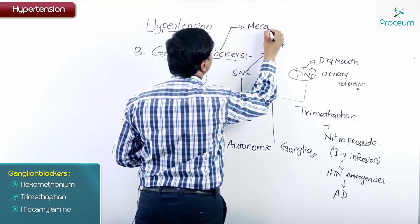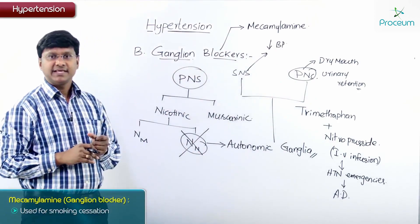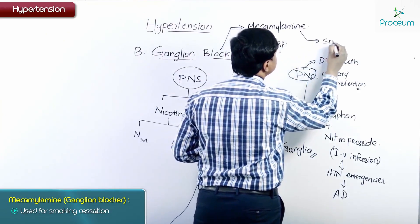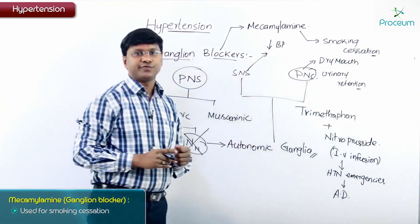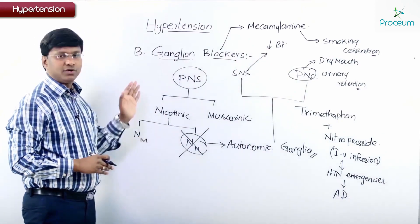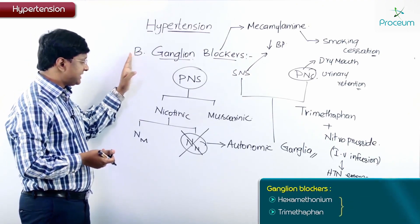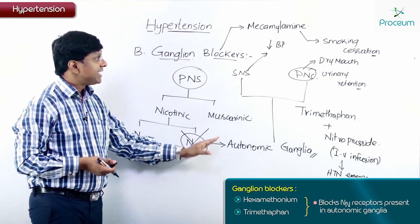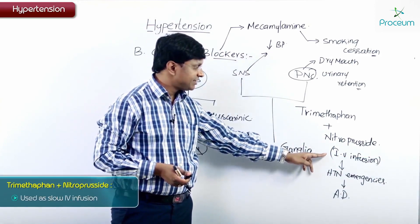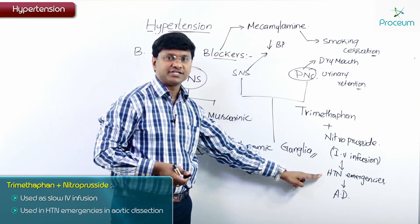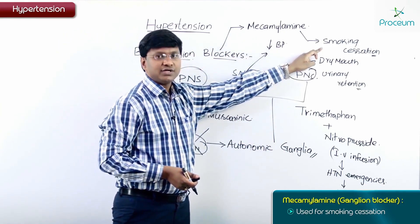We have one more ganglion blocker called mecamylamine, which is used for smoking cessation. To summarize, ganglion blockers mainly include hexamethonium and trimethaphan, which block NN receptors in the autonomic ganglia to reduce blood pressure. Trimethaphan with nitroprusside as a slow IV infusion is used for hypertensive emergencies in aortic dissection, and mecamylamine is used for smoking cessation.